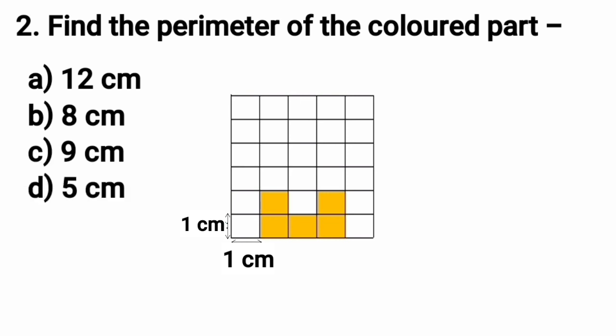Our second question is: Find the perimeter of the colored part. For this we have 4 options here. The first option is 12 cm, Option B is 8 cm, Option C is 9 cm, and Option D is 5 cm. We can see the figure - very small size squares are arranged and colored to make a colored part. The side of each small square is 1 cm. We have to find the perimeter of the colored part.